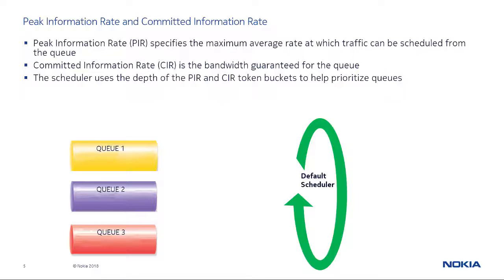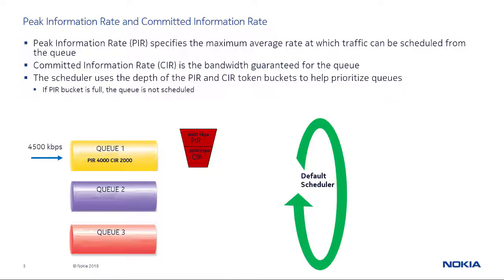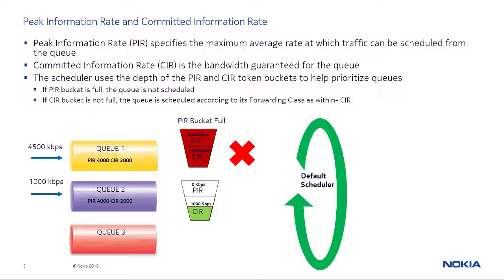In this example, we have three scenarios that show how traffic is scheduled. In the first scenario, Q1 traffic is arriving at 4500 kilobits per second, with a PIR of 4000 kilobits per second and a CIR of 2000 kilobits per second. The default scheduler checks the PIR bucket and sees that it is full, meaning traffic is being scheduled above PIR. The scheduler will not schedule a packet from Q1 until the depth of its PIR bucket goes below 4000 kilobits per second.